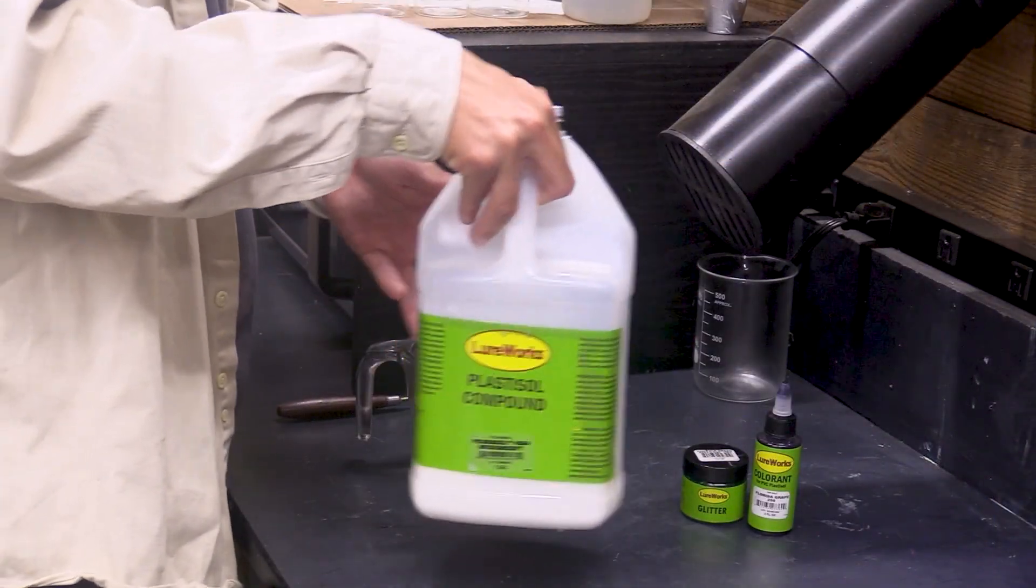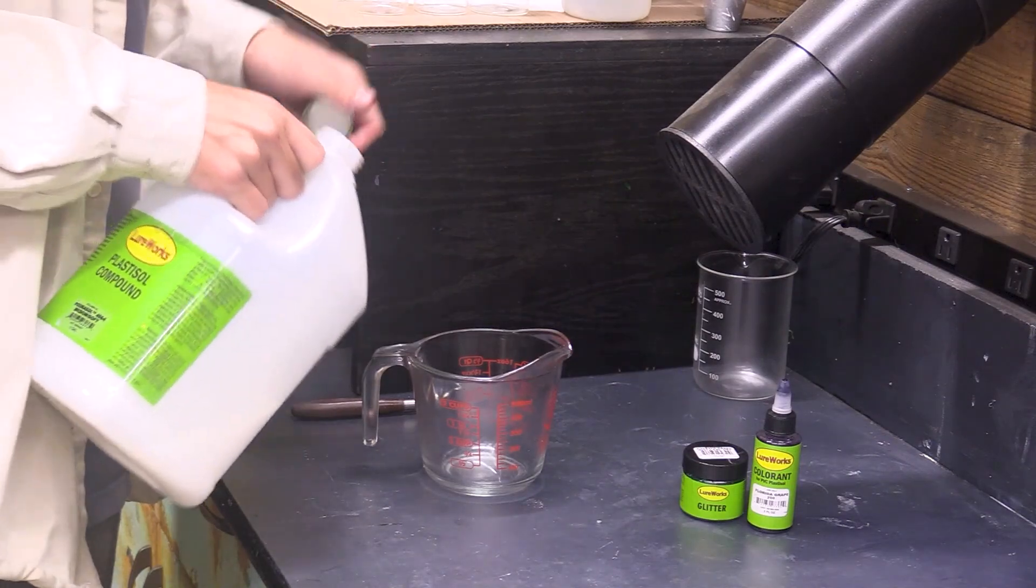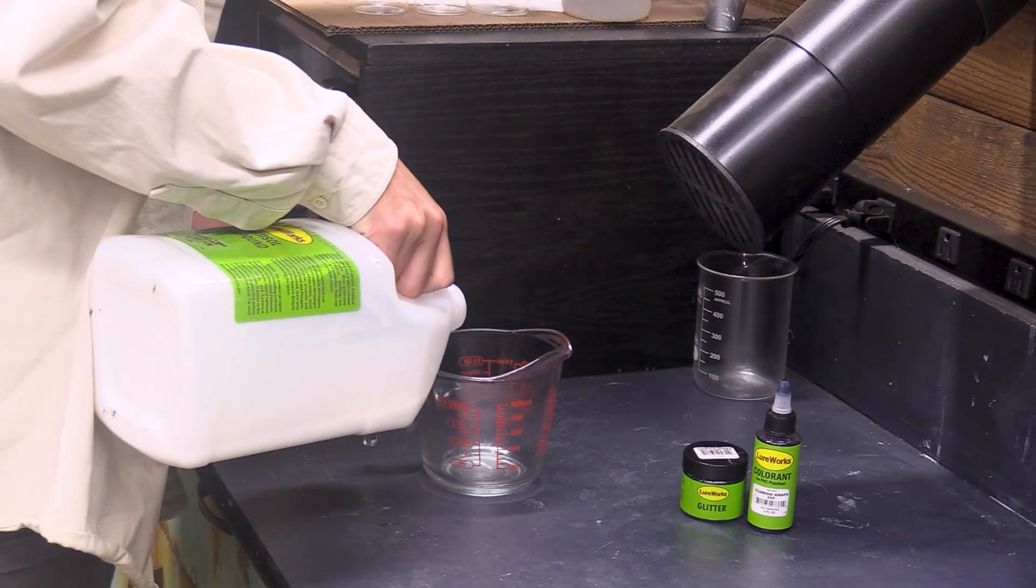Before we get started I always like to mix my plastic. What this does is it gets the elements off the bottom of the mix. Today we're going to be pouring out a cup of plastic. This should be plenty for most molds that you'll be using.